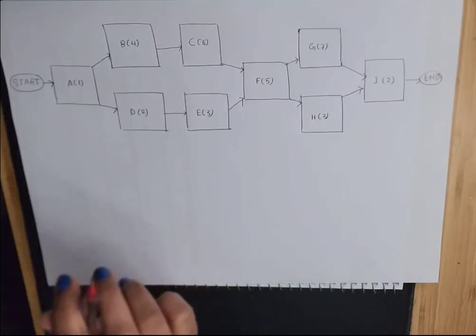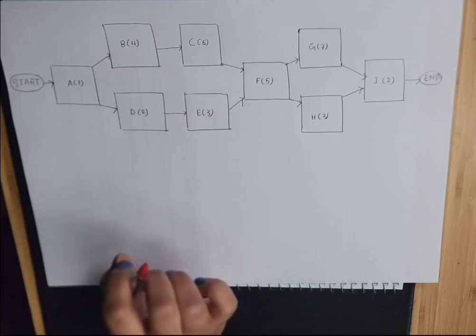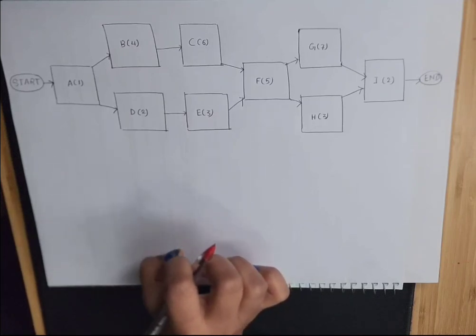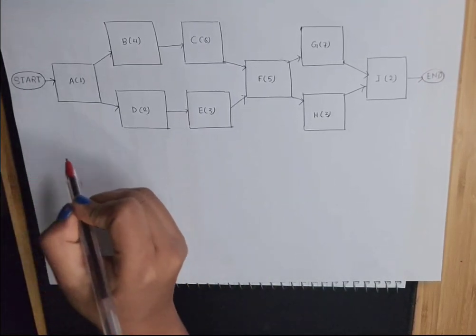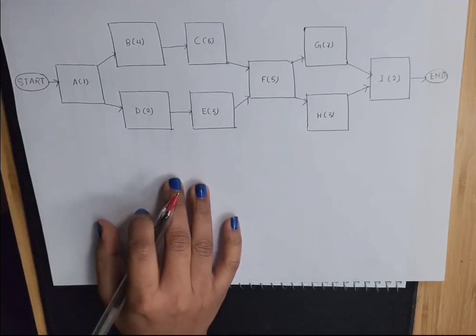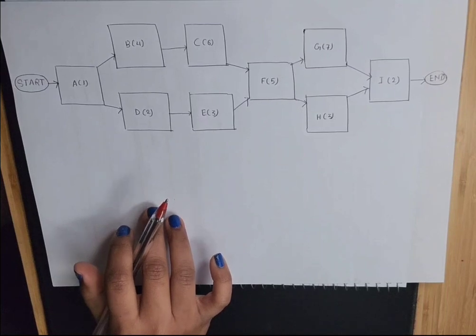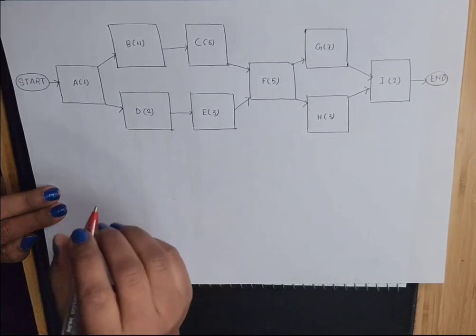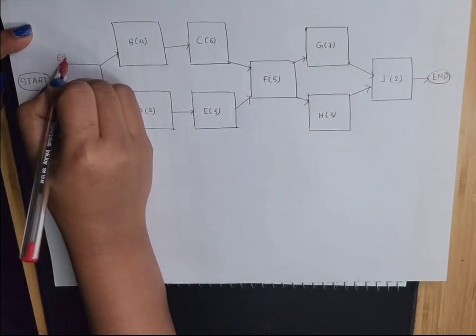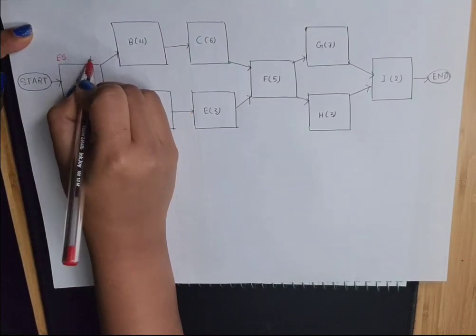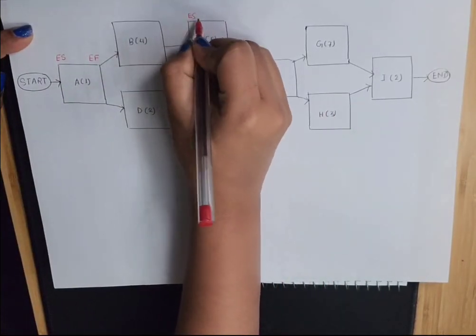Now I'll tell you how to calculate early start, early finish, late start, and late finish for any given project network diagram. To calculate early start and early finish, you must know the duration of each activity. From the question, I have written all the durations. I'm going to write early start on the top left corner and early finish on the top right corner for each activity.